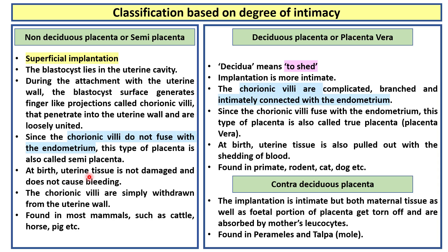At birth, uterine tissue is not damaged and does not cause bleeding. The chorionic villi are simply withdrawn from the uterine wall. This is found in most mammals such as cattle, horse, pig, etc.